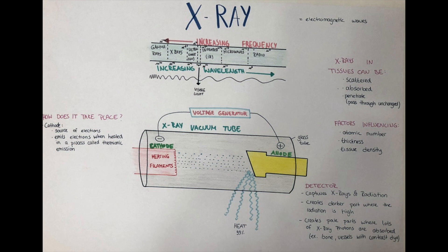When the x-rays travel through the different tissues of the body, they can either penetrate the tissue, be absorbed by the tissue, or be scattered. What process takes place varies according to the different tissues' density, thickness, and atomic number. Bones, for example, have a high atomic number — they contain high amounts of calcium — so many of the x-ray photons are absorbed and do not travel further.